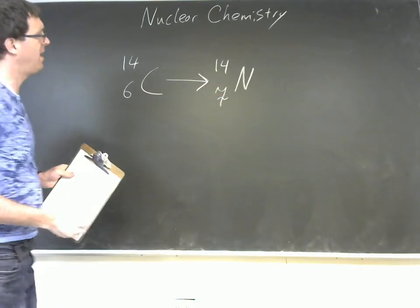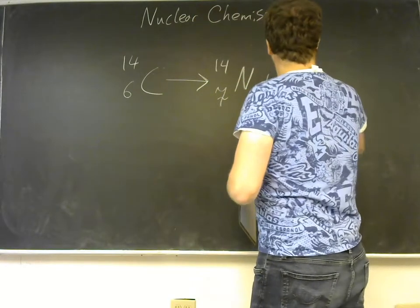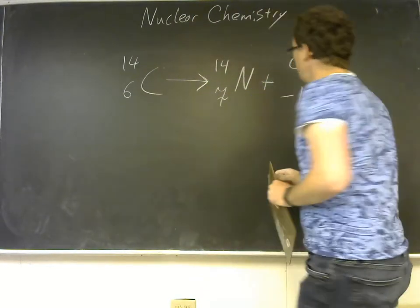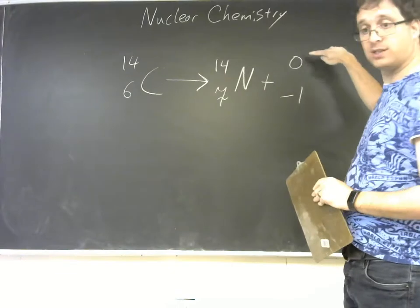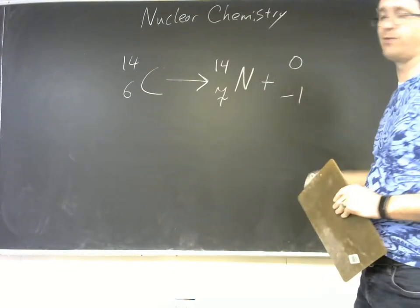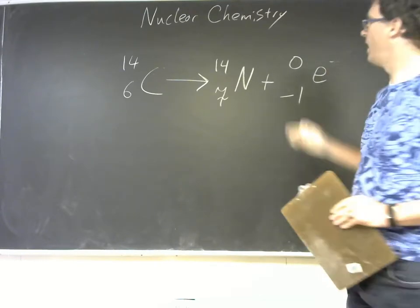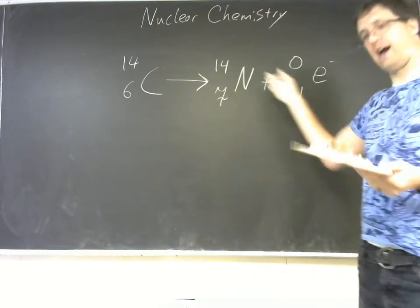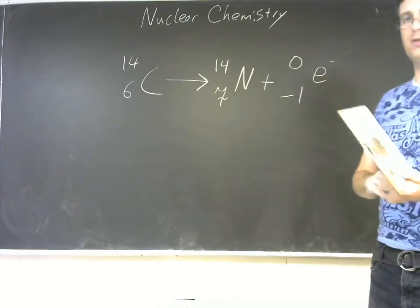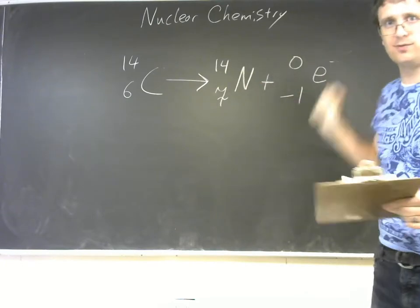When we're balancing nuclear reactions, all of the mass numbers on the left should equal the sum of all the mass numbers on the right. And here we're good. But all of the charge numbers on the left should equal all of the charge numbers on the right. And what we're missing here is a new particle, which is also a product, and it has a mass of zero and a charge of negative one. And that is an electron. And now this nuclear reaction is balanced. So I'm introducing this a little bit out of order, sorry.